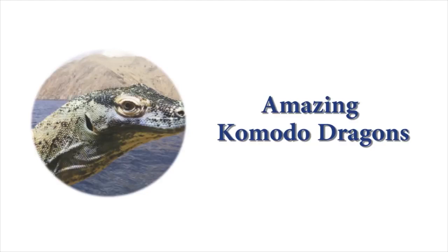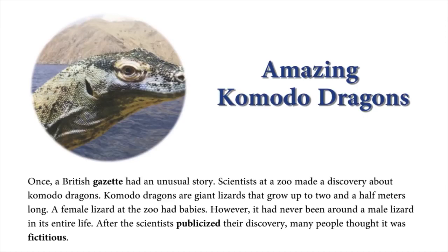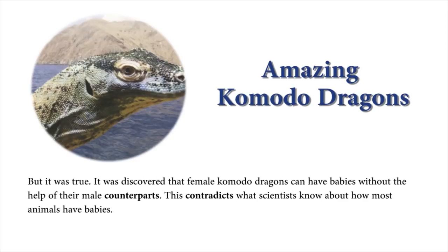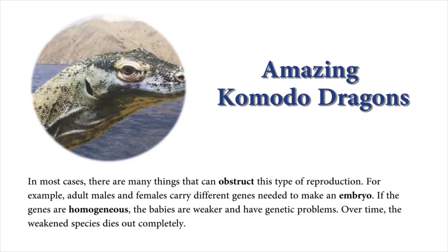Amazing Komodo Dragons. Once, a British gazette had an unusual story. Scientists at a zoo made a discovery about Komodo dragons — giant lizards that grow up to two and a half meters long. A female lizard at the zoo had babies; however, it had never been around a male lizard in its entire life. After the scientists publicized their discovery, many people thought it was fictitious, but it was true. It was discovered that female Komodo dragons can have babies without the help of their male counterparts. This contradicts what scientists know about how most animals have babies. In most cases, there are many things that can obstruct this type of reproduction. Adult males and females carry different genes needed to make an embryo. If the genes are homogeneous, the babies are weaker and have genetic problems.